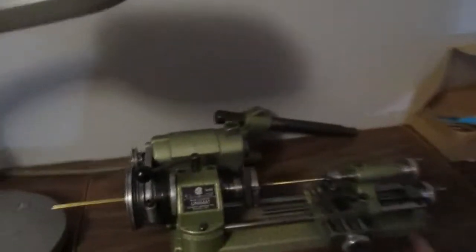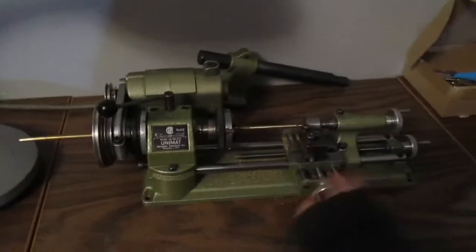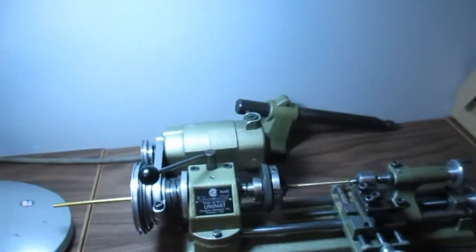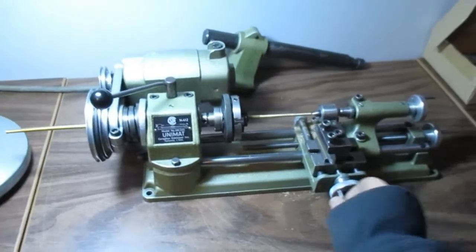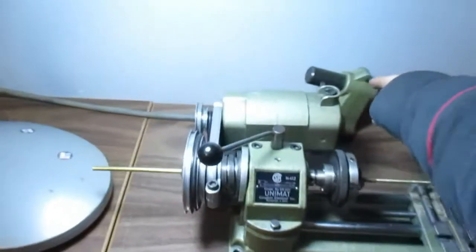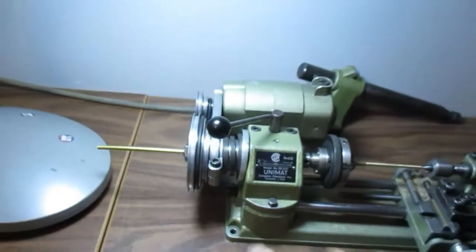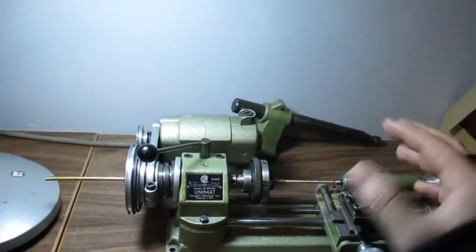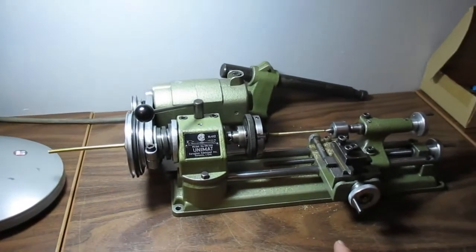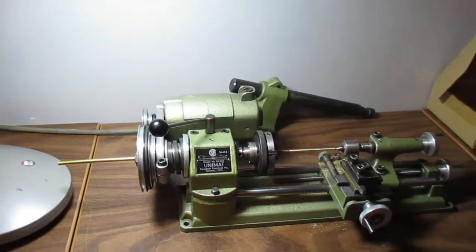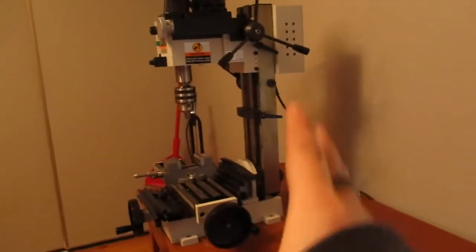Over here we have my Unimat lathe, which many are familiar with. It does a great job doing everything I need, but for the most part I just do brass. This is an extension that would normally attach onto the base here for the headstock. It could become a mill but it's not the most sturdy mill, and switching it back and forth between each was a real hassle. That's why I went out and bought the Craft X mill in the first place.